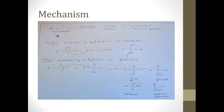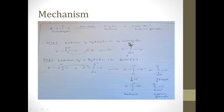Now let's see the mechanism. In formaldehyde (HCHO), the carbonyl carbon is the only carbon present; there is no attached alpha or beta carbon, so there is no alpha hydrogen. This is the prerequisite requirement for the Cannizaro reaction. Two molecules of formaldehyde give methanol and sodium formate, the sodium salt of formic acid.